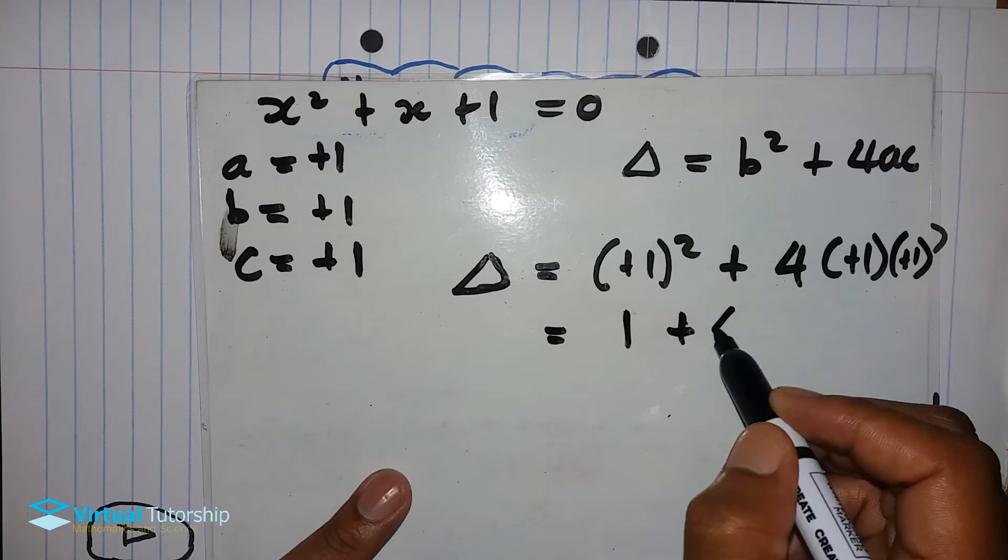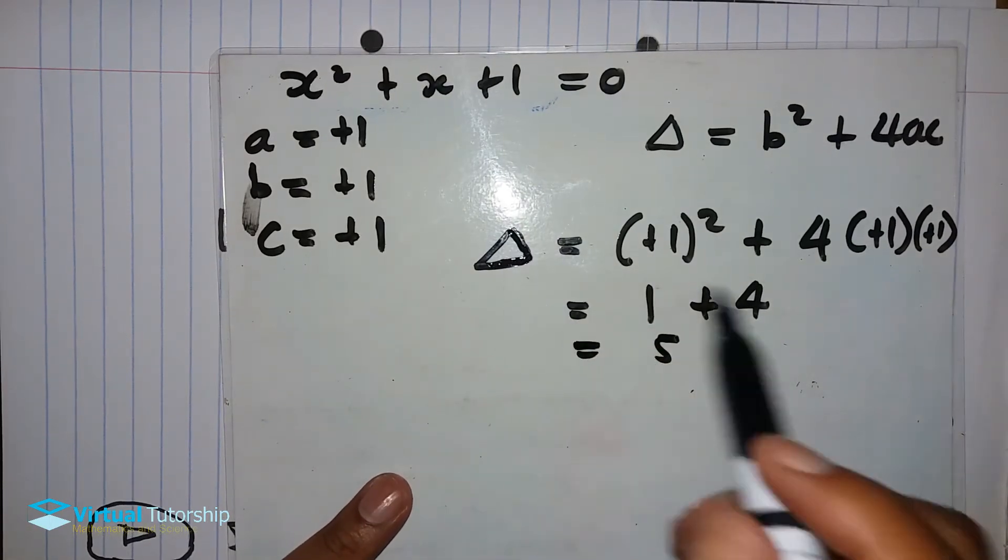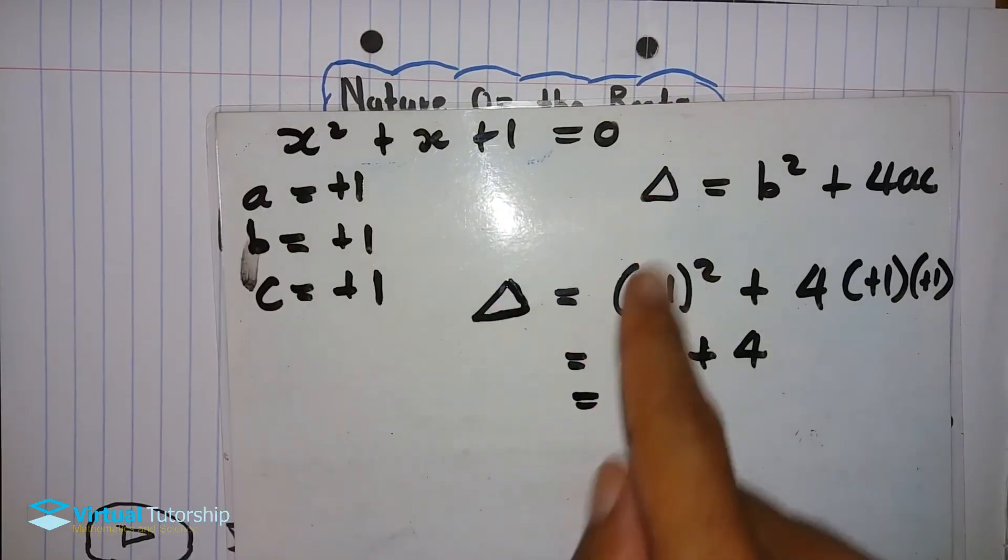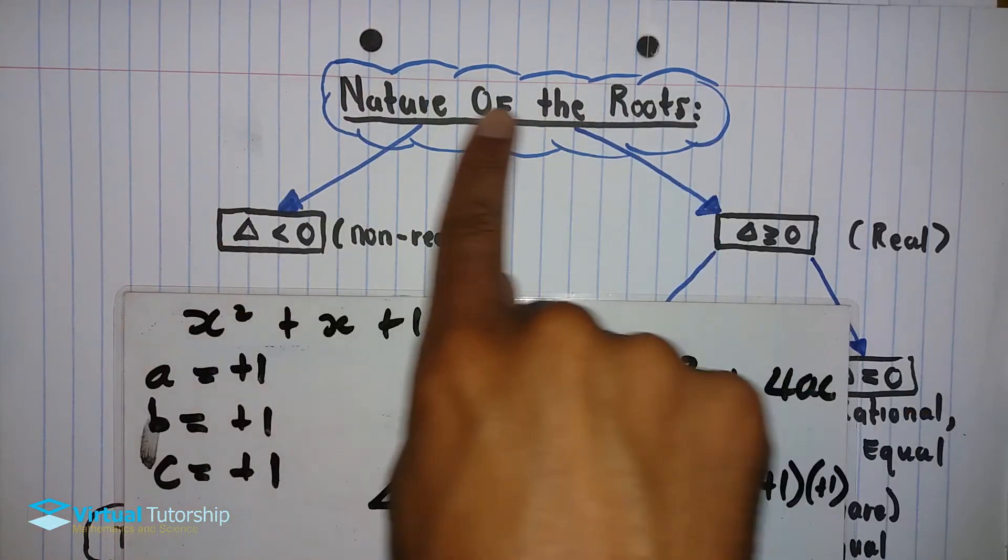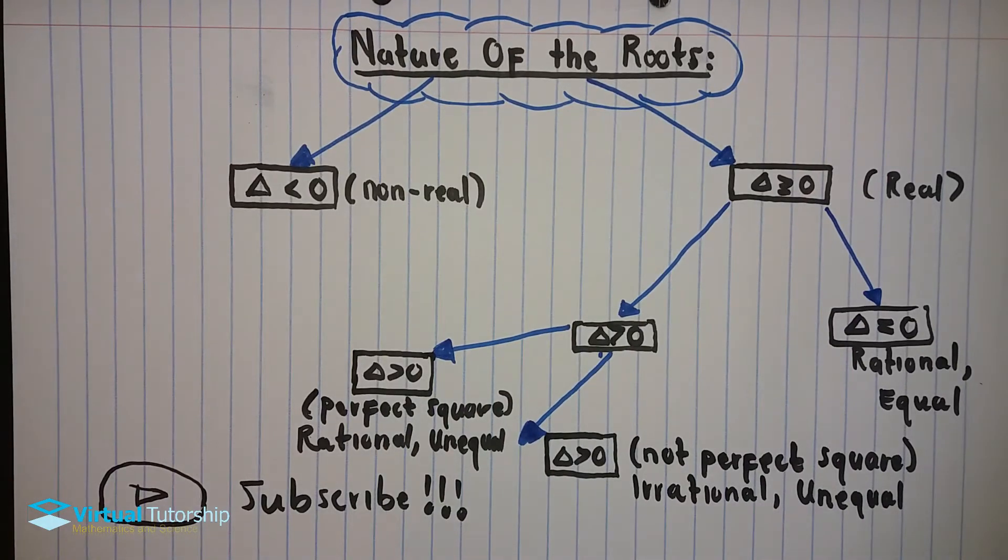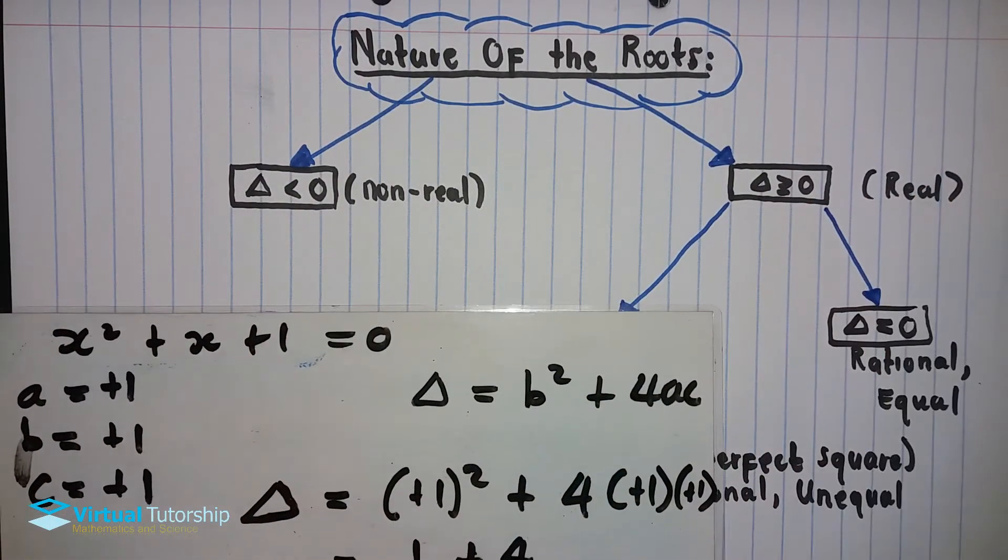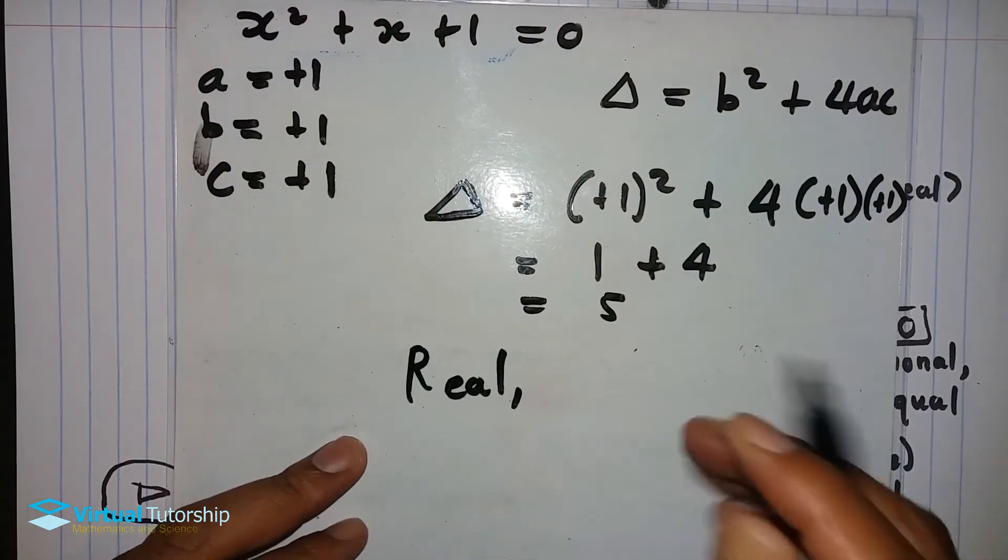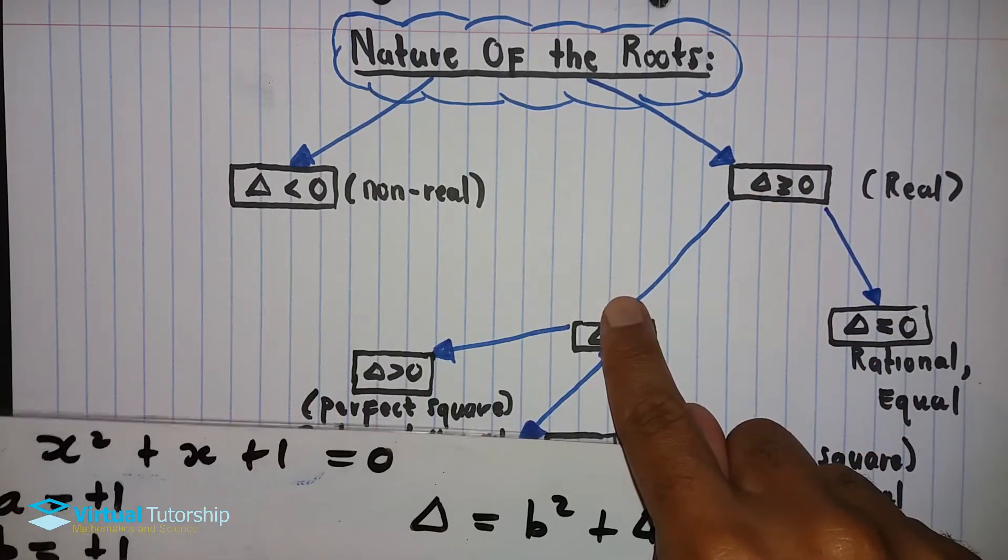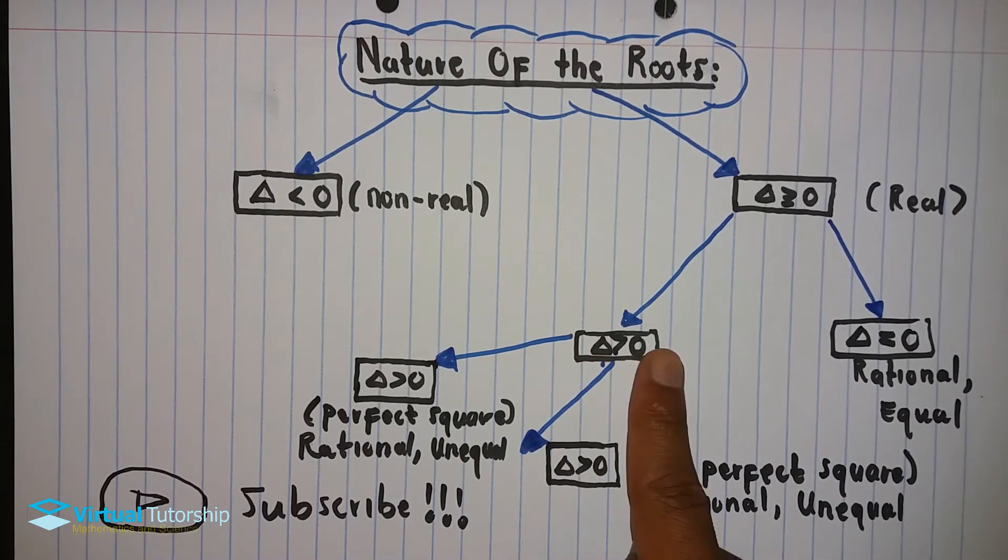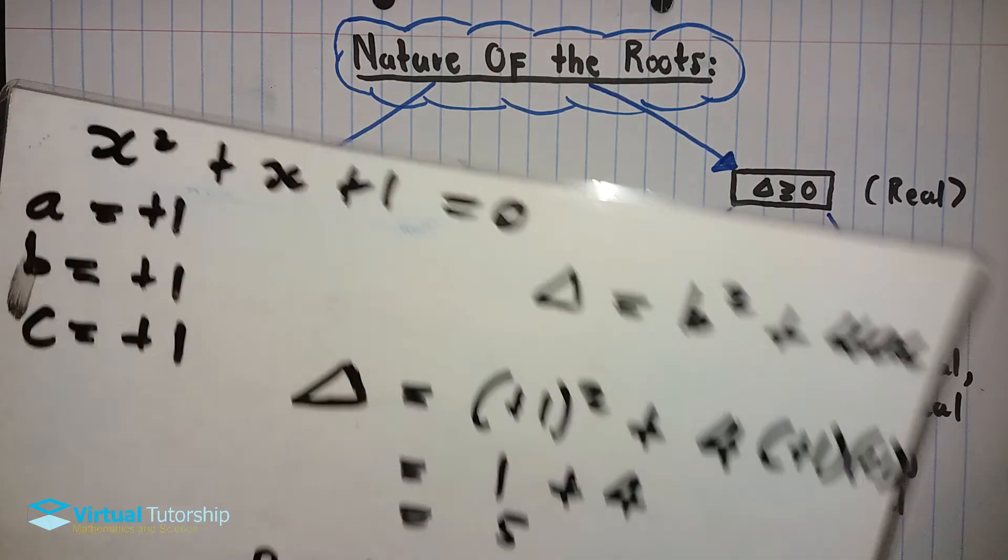Now I want to determine the nature of the roots for this equation. First, keep your a, b, c values and substitute into the delta equation. So b is plus one, a is plus one, and c is plus one. Let's solve: it's one plus four, which is gonna be four times one times one, so it's equal to five. The delta is five, which is greater than zero, so it's gonna be real. But the delta is not equal to zero, and the delta is not a perfect square, so the roots are irrational and unequal.